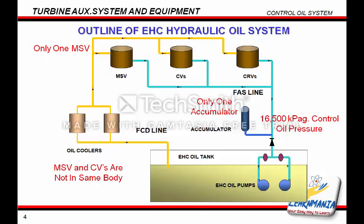The EHC oil system comprises two pumps, an oil tank, two oil coolers, and two accumulators. It supplies oil to the CVs, MSVs, and CRVs via a filter. The small size of the hydraulic cylinders, made possible by the high pressure of the oil, results in high system control. Fire-resistant oil is used in this system due to the high fire danger in the event of a high-pressure oil leakage. Control oil is maintained at 2,400 psi for new combination type MSV and CV valves, and at lower pressures for directly connected MSV-CV valves.